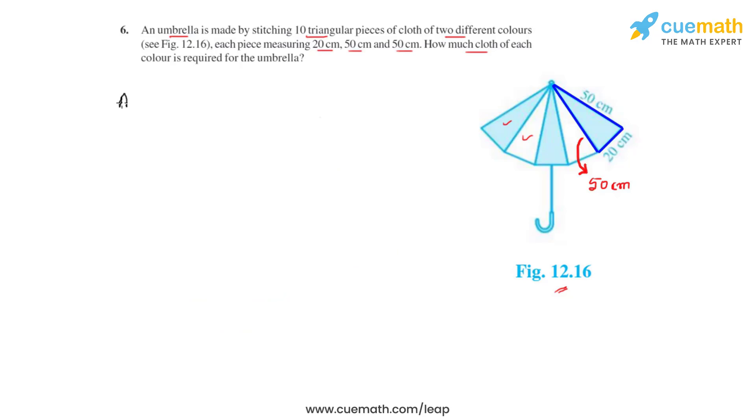We write the area for one such color will be equal to five times the area of one triangular piece of cloth, which is 200 root 6 centimeter square. So this is the answer for the question that each of the color will require 1000 root 6 centimeter square area of cloth to make the umbrella.